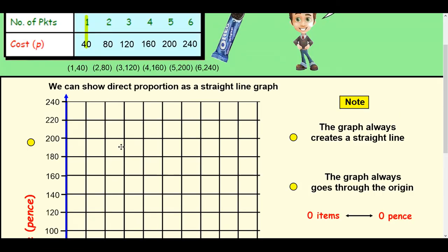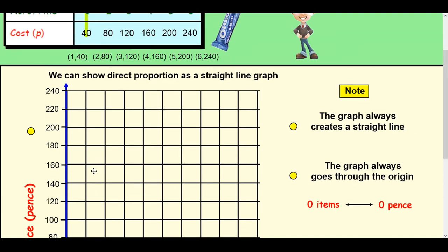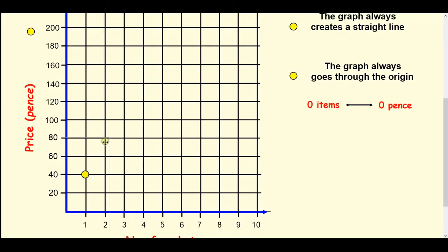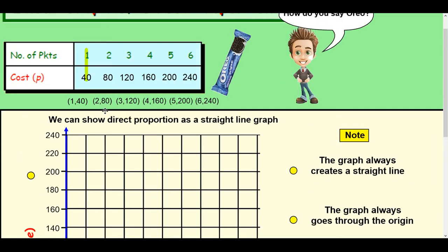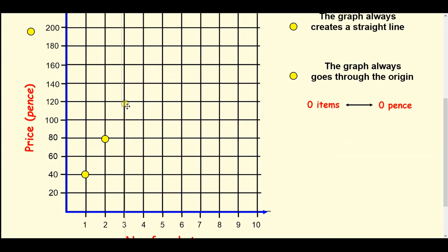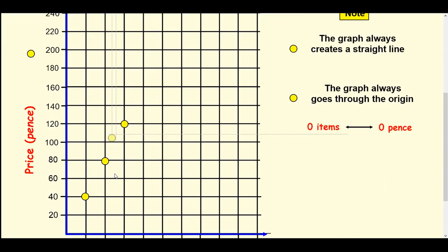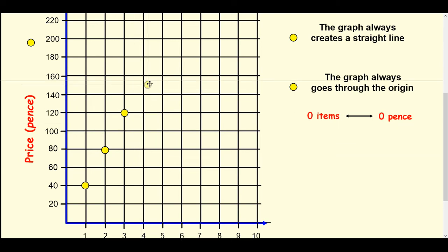Now if you're plotting the coordinates, you would plot 1, 40, so 1 along and 40 up. Next coordinate is 2, 80, so we'll go 2 along and 80 up, that would be there. And then we've got 3, 120, so we'll go along to 3, up to 120, like that. Then we've got 4, 160, so 4, 160 would be there.